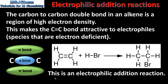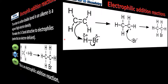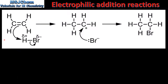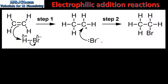Next, we look at the mechanism of the reaction in more detail. Here we have the mechanism for the reaction between ethene and hydrogen bromide. This is a two-step mechanism. In the first step we have the formation of a carbocation intermediate and a bromide ion. In the second step the bromide ion reacts with the carbocation.